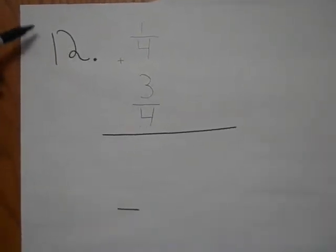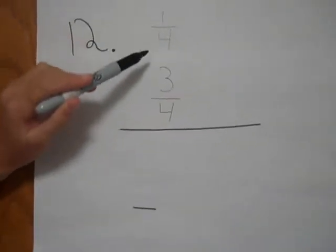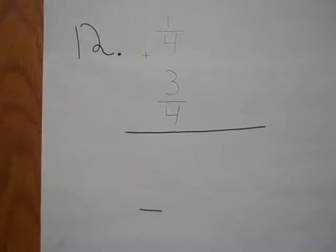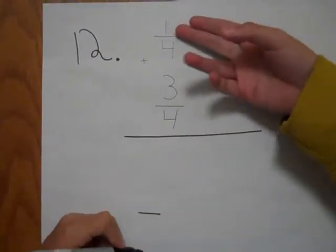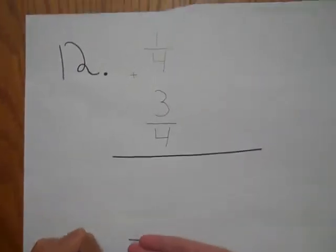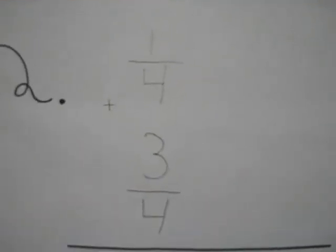So this is number 12 in our study guide. One-fourth plus three-fourths. Well, it's the same bottom number, so it's the same denominator. So the denominator's the same. So you can either put four-fourths or one or one whole.